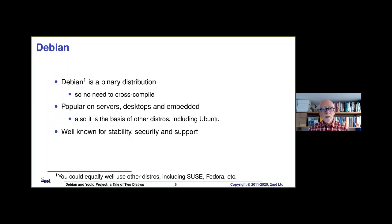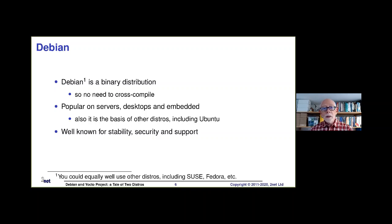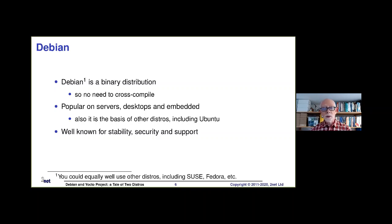I'm using Debian here as a placeholder for any other distribution you may be using — so pretty much everything applies also to Susie, Fedora, and your own favourite distro. Debian is commonly used for embedded systems. The main advantage of Debian is it's a binary distro: you don't have to cross-compile anything, you just pick up the binaries and away you go. Debian is familiar to a lot of people in the guise of Ubuntu, which is based on upstream Debian.